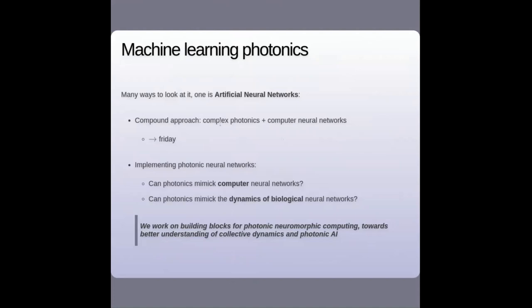There are at least two ways. One is a compound approach where you use complex photonics on one side and computer neural networks on the other to do part of the work. The other approach is where photonics tries to implement the neural networks — that is what I'll be about today. Inside this second category there are at least two approaches. For instance, we can wonder if photonics can mimic computer neural networks — that is the approach developed by Demetris in the first part of his talk.